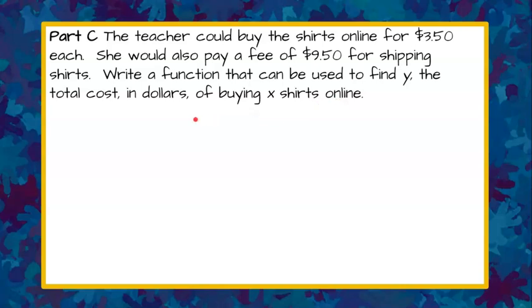Welcome back. We now know that we're going to use slope intercept form again, and we need to identify the slope, which is the cost for one shirt plus any initial amount. We go back to our problem and see that they're going to pay $3.50 each to go online. So that's my slope.